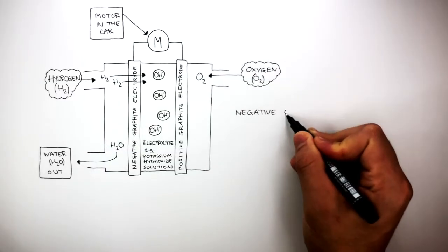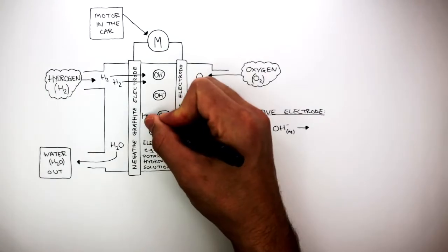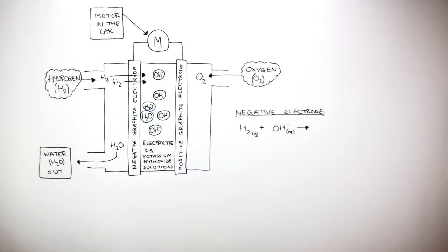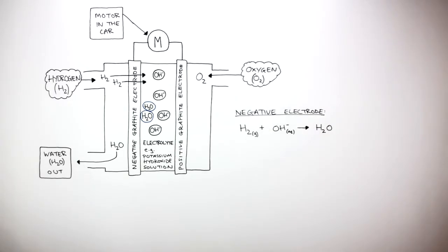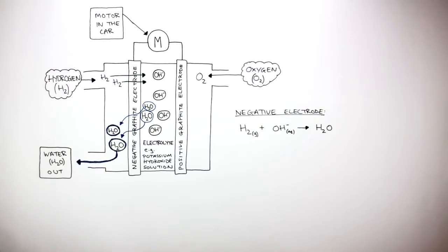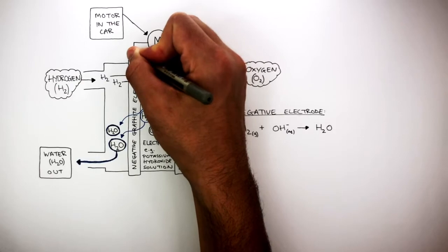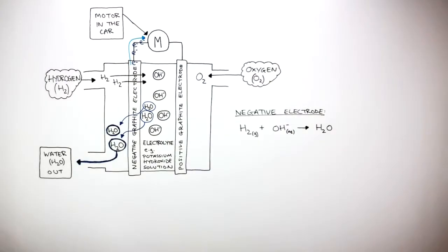At the negative electrode, H2 reacts with OH⁻, forming H2O. This is shown in the electrolyte, and we write H2O in the balanced symbol equation. These water molecules then diffuse through the negative graphite electrode and out of the fuel cell. Electrons are lost in this process, so the electrons flow from the negative graphite electrode to the motor. We show these electrons being lost on the negative electrode.